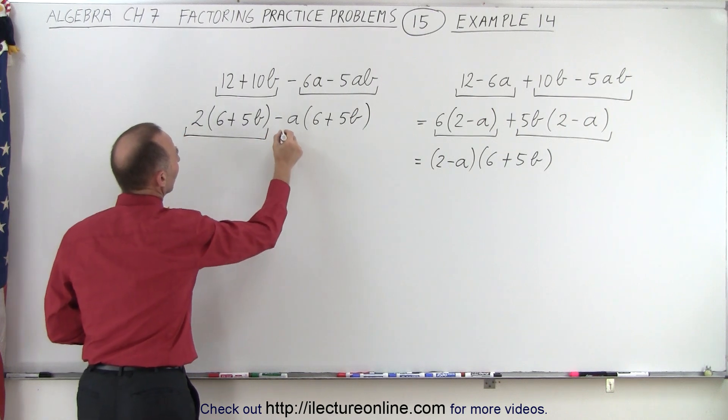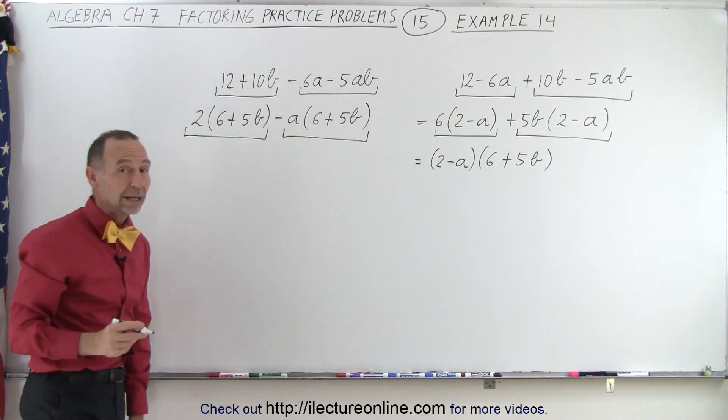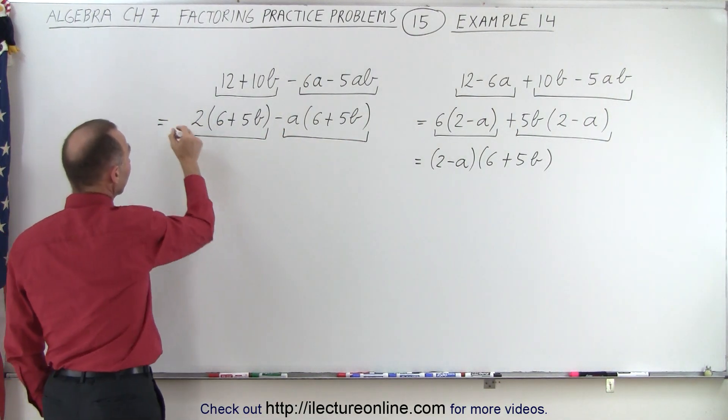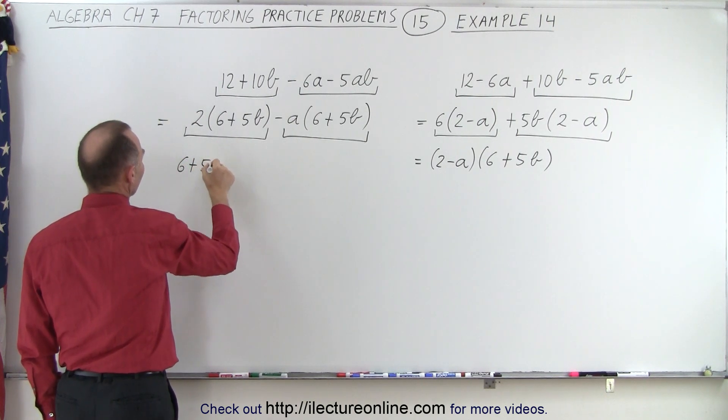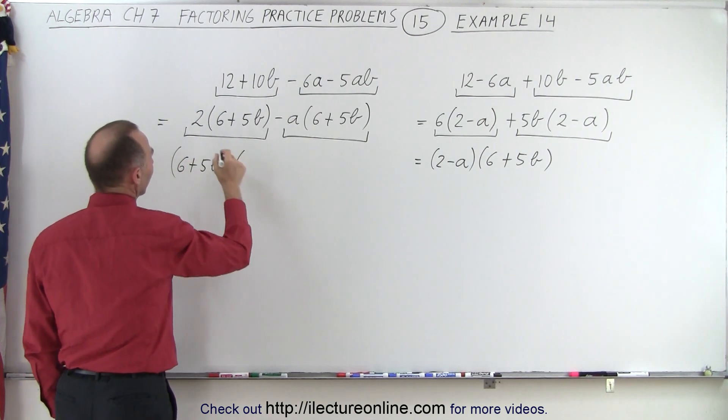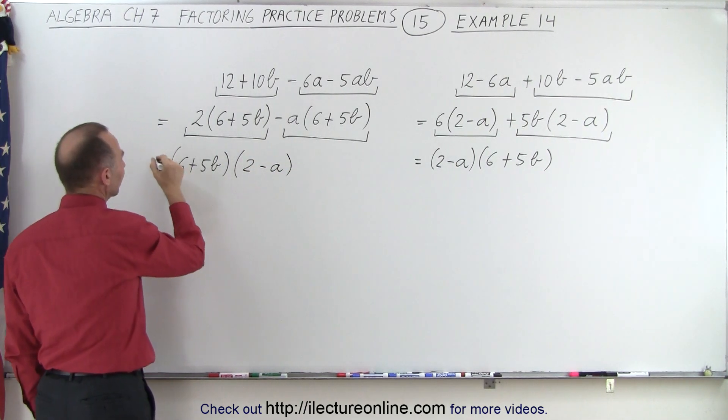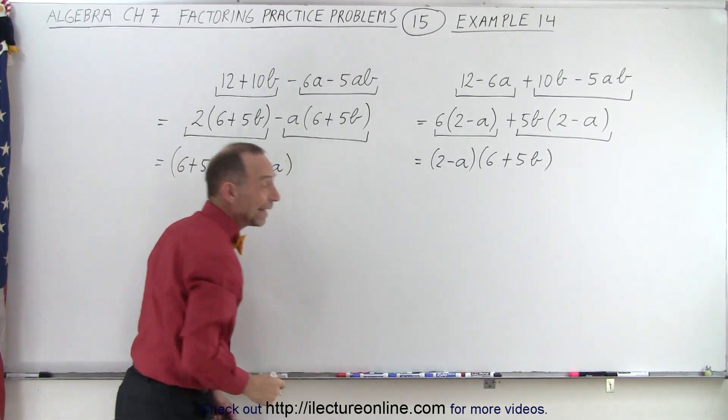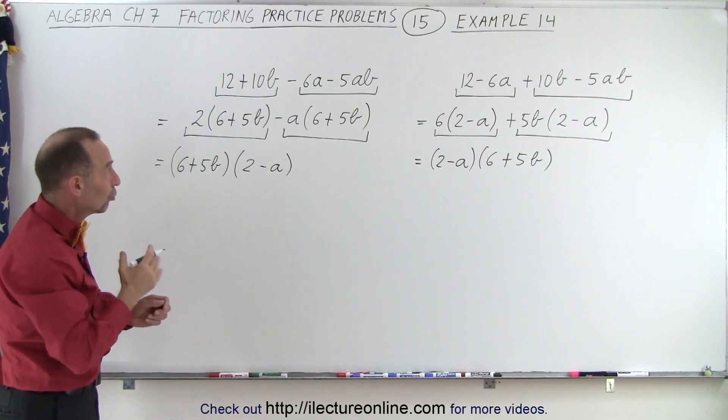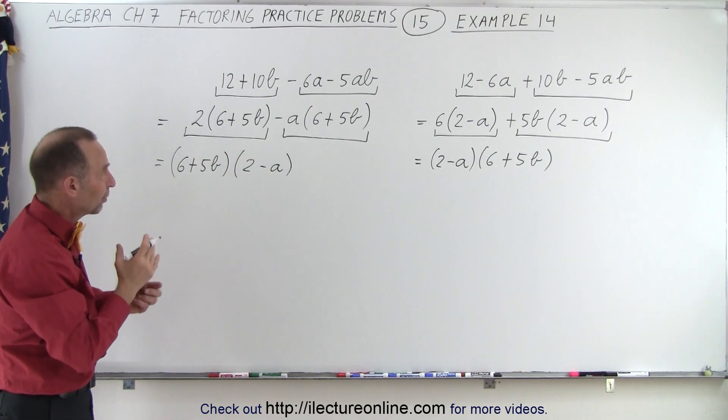And notice, again, I have two common factors in the two remaining terms. I can then factor out a 6 plus 5B. And then I have left a 2 minus A. And notice, I end up with the exact same result as I did before. It didn't matter which two terms I grouped together.